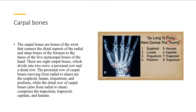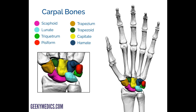The proximal row of carpal bones, moving from radial to ulnar, are the scaphoid, lunate, triquetrum, and pisiform. The distal row of carpal bones, also from radial to ulnar, comprises the trapezium, trapezoid, capitate, and hamate.